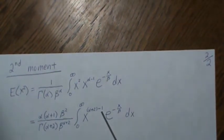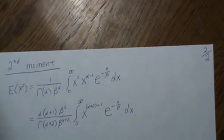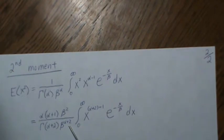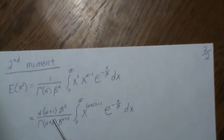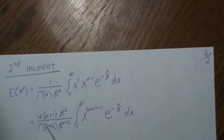Then again we trick this into looking like a PDF, so we multiply and divide by beta, and then we multiply and divide by alpha times alpha plus 1.